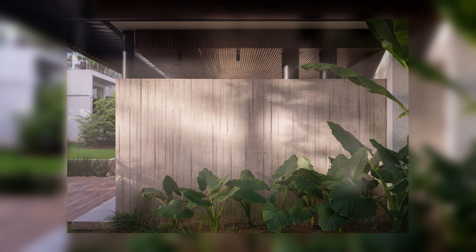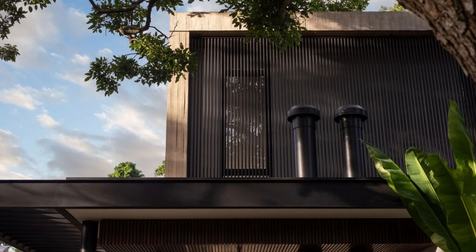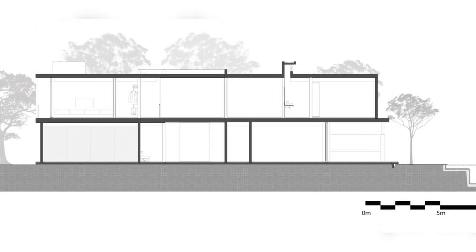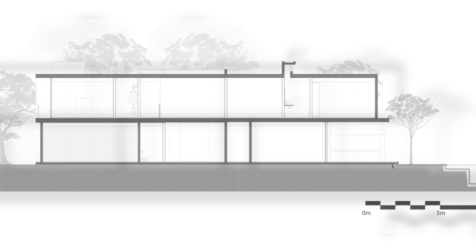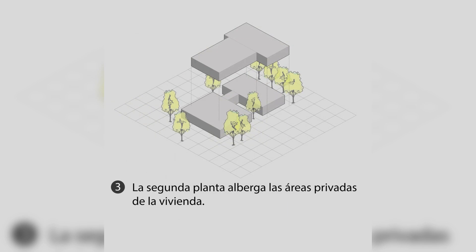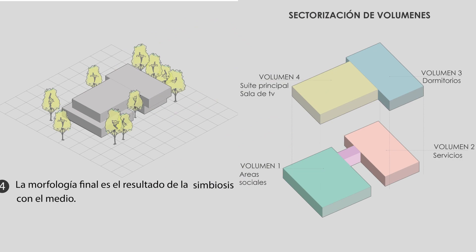Architectural elements such as metal pergolas are used to integrate these trees and become a substantial part of the project. The main facade is treated to provide privacy to its users, while the rear facade opens to the landscape that surrounds it to take advantage of the best views.